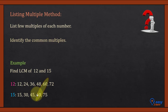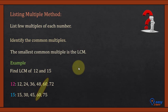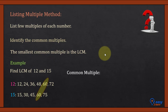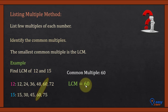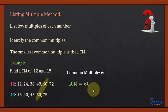Identify the common multiple. So 60 is the common multiple and it is the first common multiple appearing in both lists. The smallest common multiple is the LCM. So the LCM of 12 and 15 is 60. This means 12 will divide 60 completely and 15 will also divide 60 completely without any remainder.